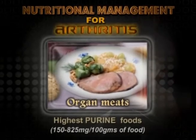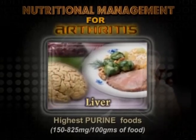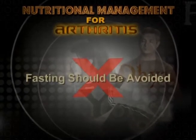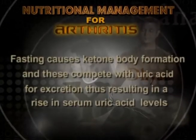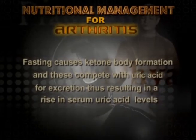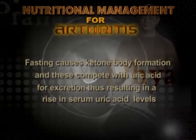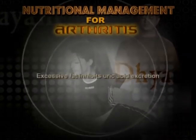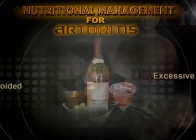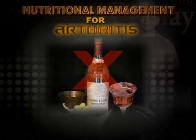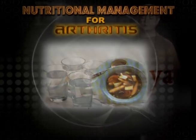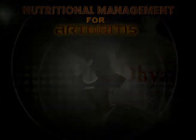High purine foods include yeast, mackerel, organ meats like liver, brain, heart, and sardines. Fasting should be avoided as it causes ketone body formation, and these compete with uric acid for excretion, thus resulting in a rise in serum uric acid levels. Excessive fat inhibits uric acid excretion and needs to be avoided. Restrict or avoid alcohol consumption. Consume plenty of fluids.